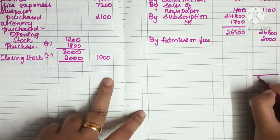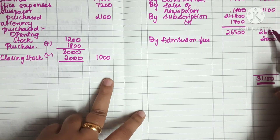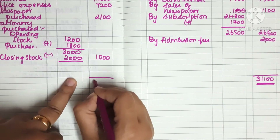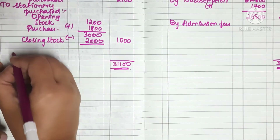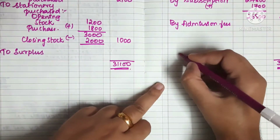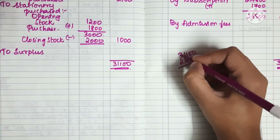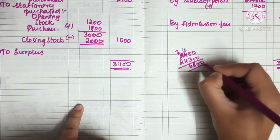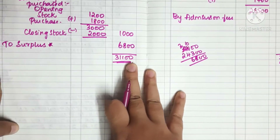So this gives us 3100 on the greater side. If the income side is greater than the expenditure side, we have a surplus. The surplus is 3100, because the income is 24,300 and the expenditure minus counts to 21,200. We can now add the surplus to the balance sheet.